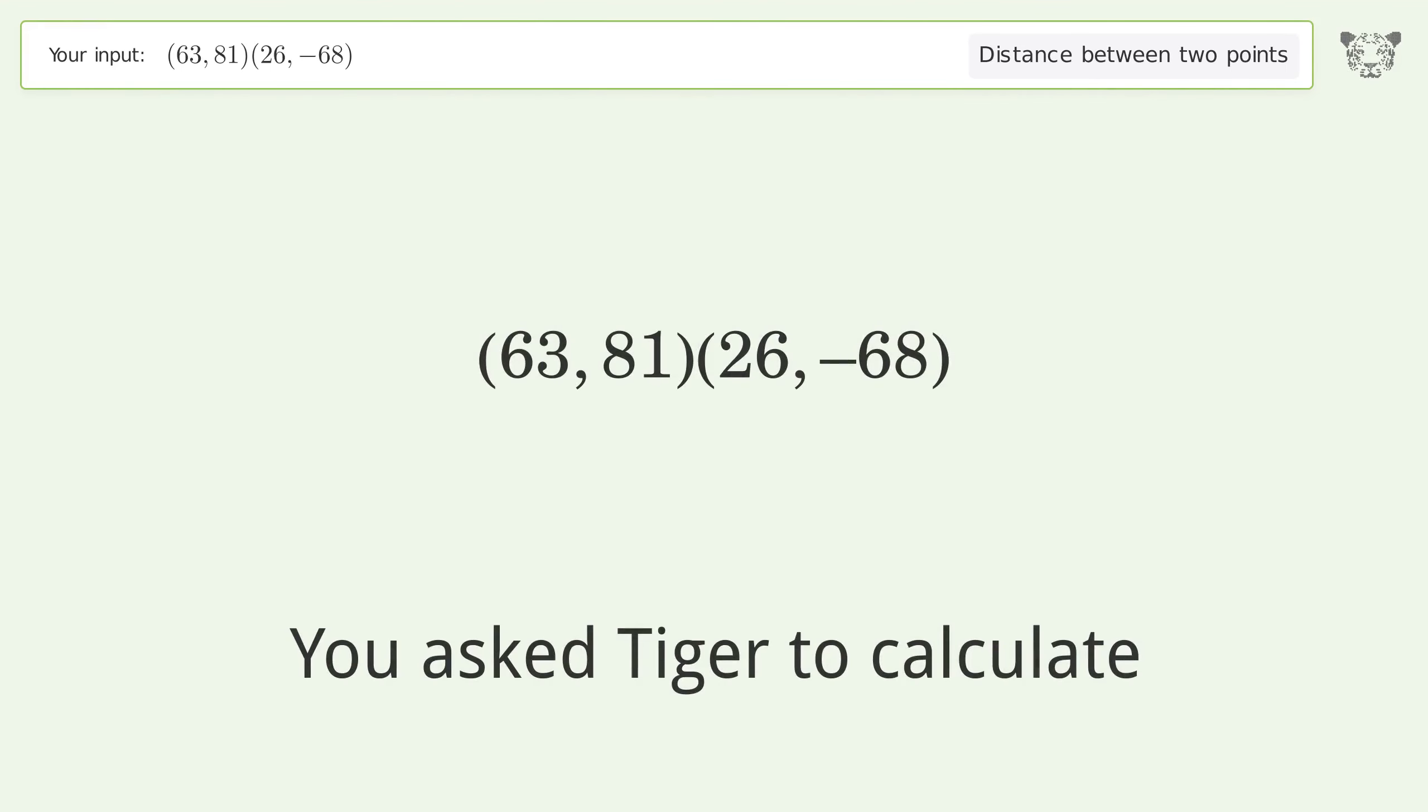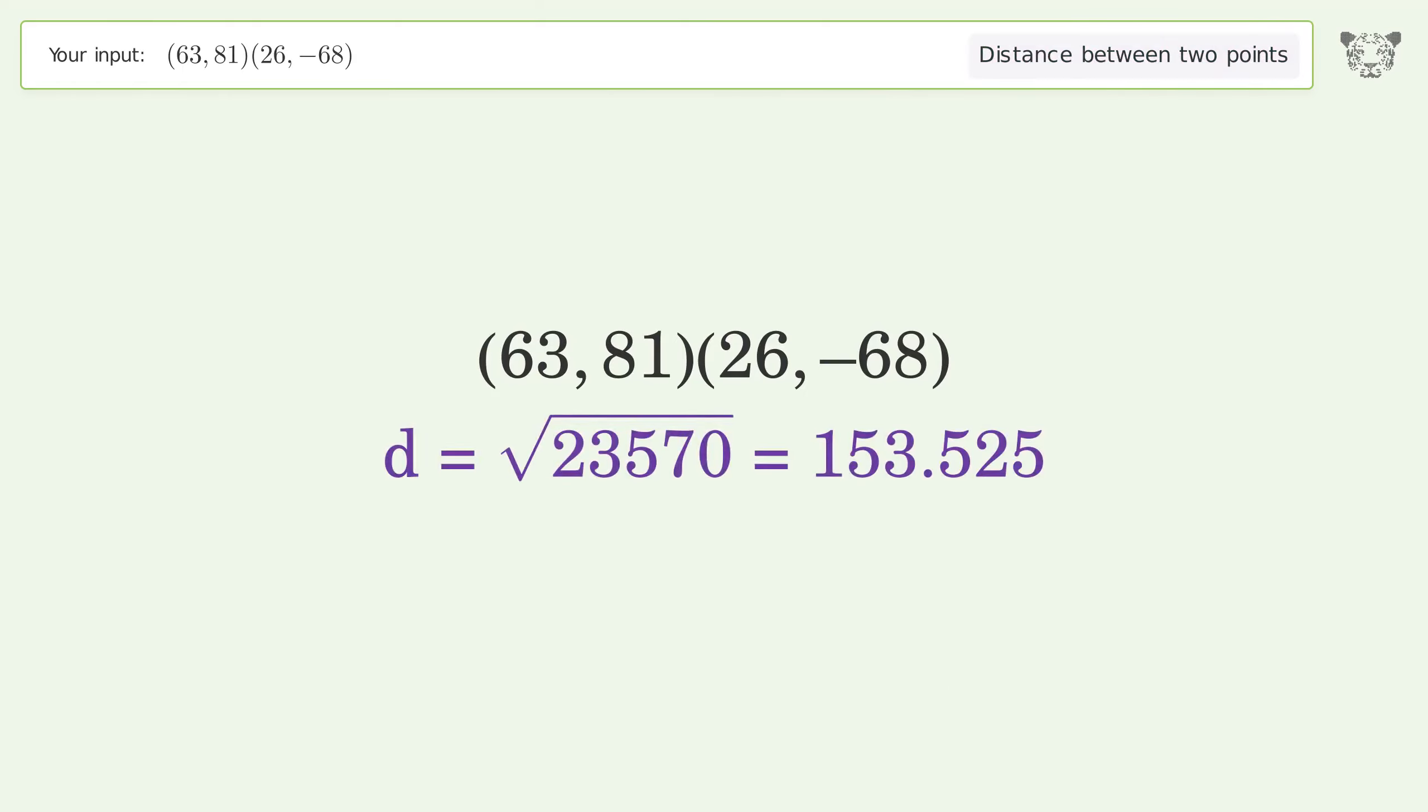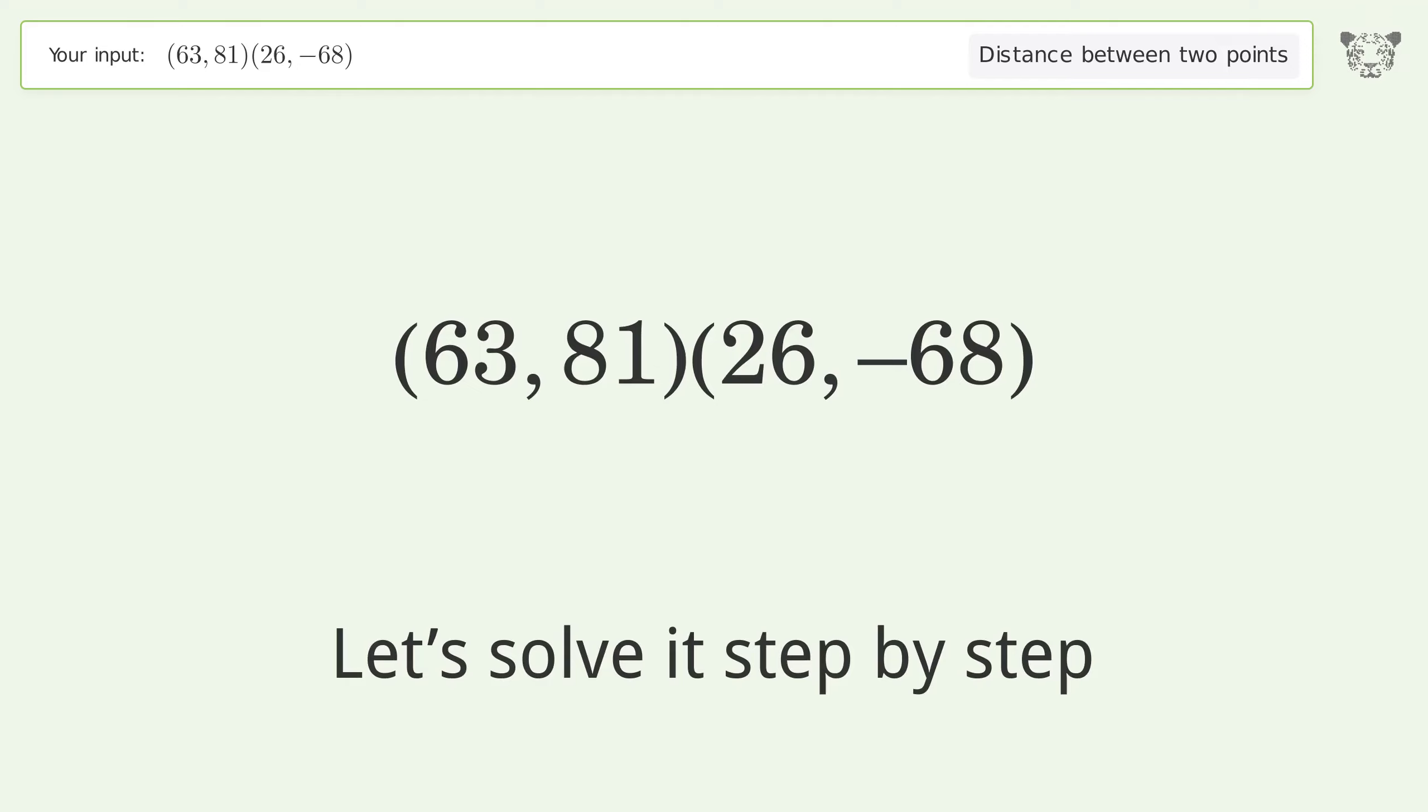You asked Tiger to calculate the distance between two points. The distance between the two points is the square root of 23,570, or 153.525. Let's solve it step by step.